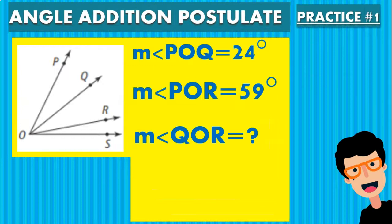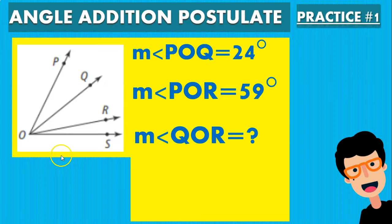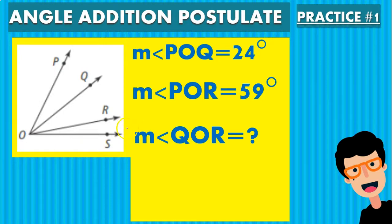In this first example we're given two values: angle POQ, which is equal to 24 degrees, and angle POR, which has a measurement of 59 degrees. They're asking us to find the measurement of angle QOR. So let's take a look at the rays to see which angles they are talking about.